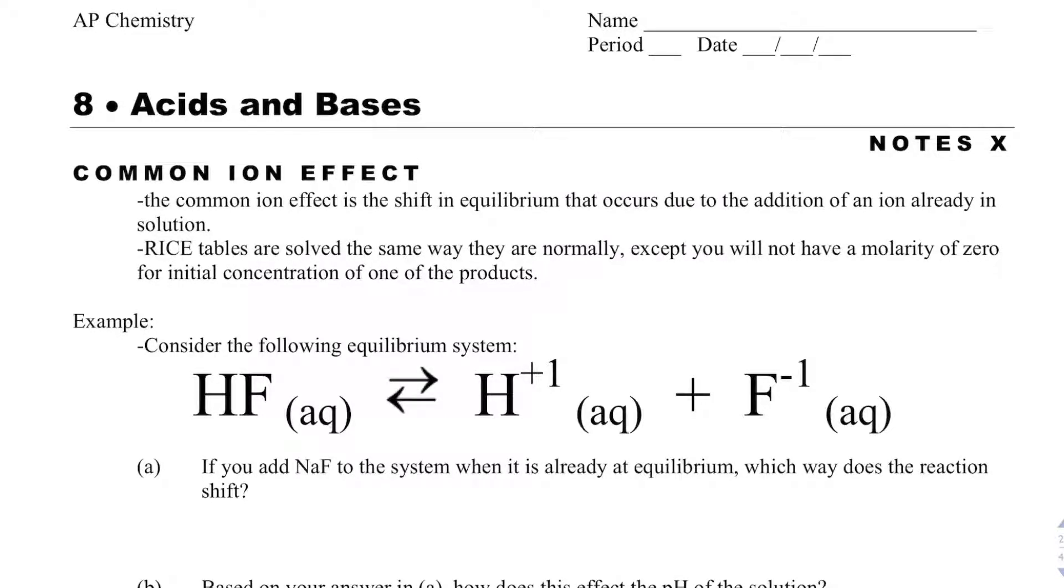In this video, we will discuss how to figure out the pH of a solution in which there is a common ion, and how a common ion affects the pH. When we solve these problems, it's good to know that we're going to use RICE tables. The only difference is that for our common ion, its initial concentration will not be zero.